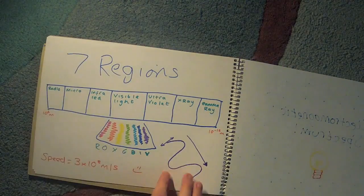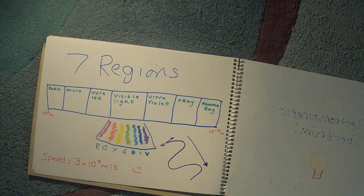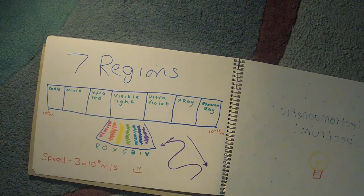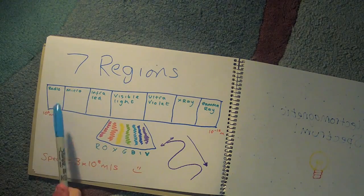There are seven regions of the electromagnetic spectrum. They are as follows: radio waves, microwaves, infrared, visible light, ultraviolet, x-ray, and gamma rays.